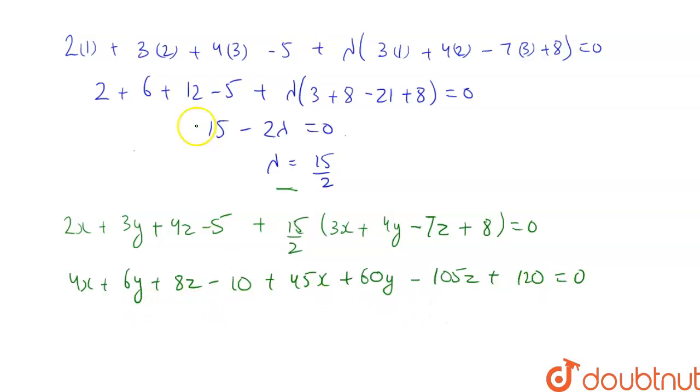So collecting these we get the equation as 49x plus 66y minus 97z plus 110 is equals to 0. This is the equation of plane.